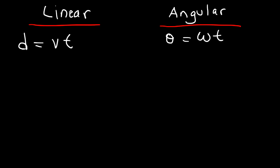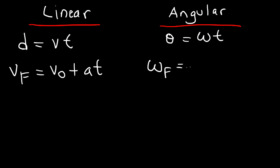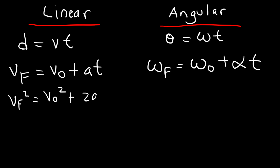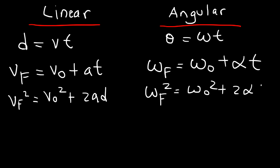What about if an object is moving with a constant acceleration value? We have these equations: v final is equal to v initial plus at, where v final represents final speed or velocity. In the angular universe, it's omega final equals omega initial plus alpha times t. Whenever you see an a, replace it with alpha. The next equation is v final squared equals v initial squared plus 2ad. The angular version is omega final squared equals omega initial squared plus 2 alpha theta. Anytime you see d, replace it with theta; v becomes omega; and a becomes alpha.